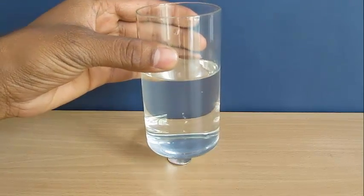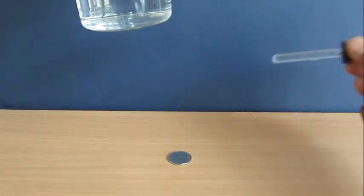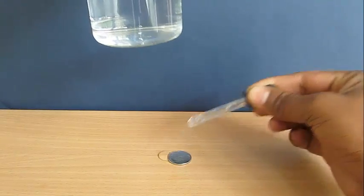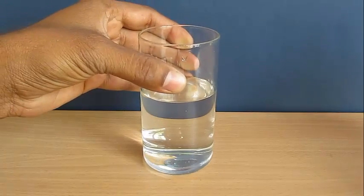To make the coin reappear, just add a few drops of water on top of the coin and put the glass back. You can now magically see the coin.